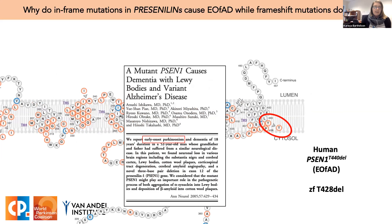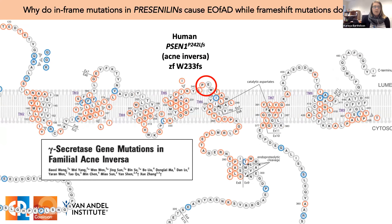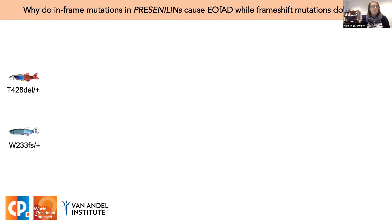I generated the first knock-in zebrafish model of an EOFAD mutation in presenilin-1 — an exact equivalent of the human EOFAD mutation T440del. The patient who carried this mutation showed a mixed dementia phenotype including symptoms of Parkinson's disease. We also generated a frameshift mutation modeling the human mutation P242FS, the only frameshift mutation in a presenilin gene known to cause a skin condition — familial acne inversa. Importantly, humans with this mutation do not get EOFAD. From here on, I'll refer to them as the EOFAD-like and the FAI-like mutations.